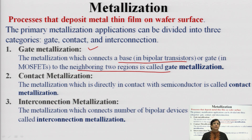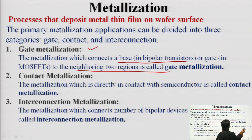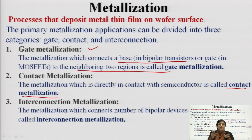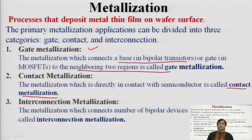The second is contact metallization, which directly interconnects the semiconductor area with the outside world. These are contacts established in defined areas like drain contact, source contact, or in a BJT the emitter contact and base contact — physically connecting the device to be part of the overall circuit.